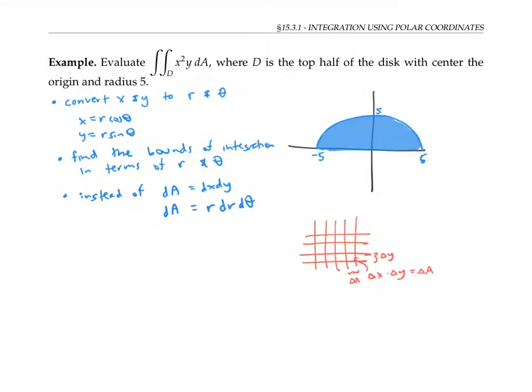But when we compute the Riemann sum in polar coordinates, we think of dividing up our region that's somewhat circular into little polar rectangles. That is little shapes that are bounded by rays through the origin on two sides, and bounded by arcs of circles on the other two sides.